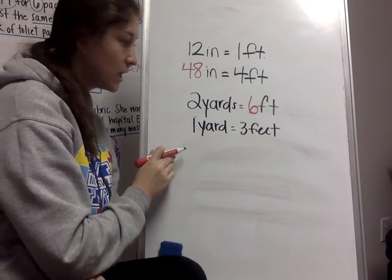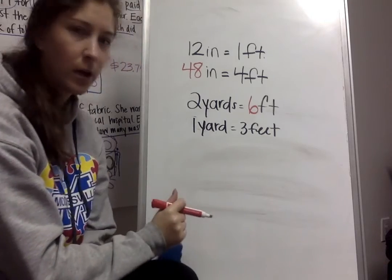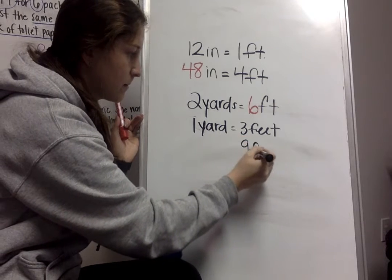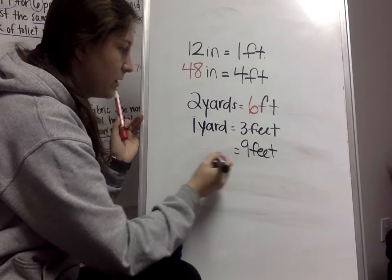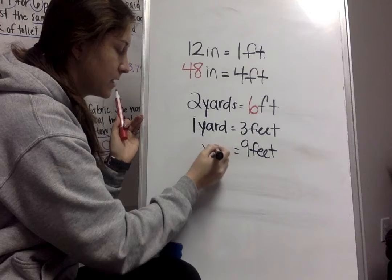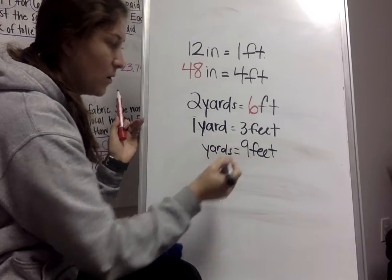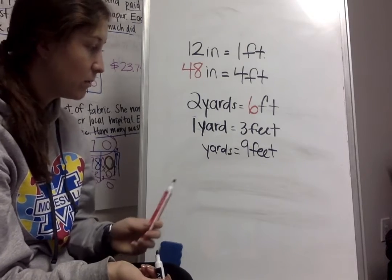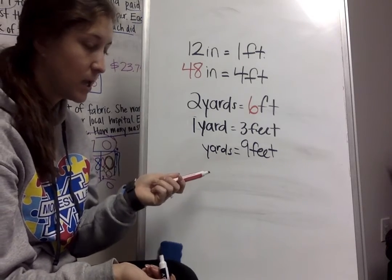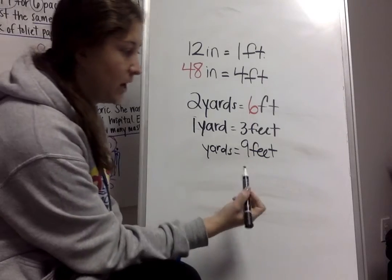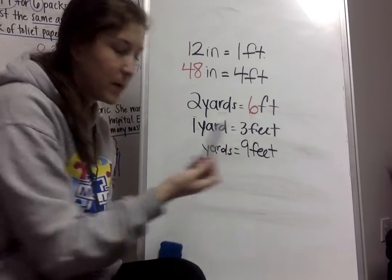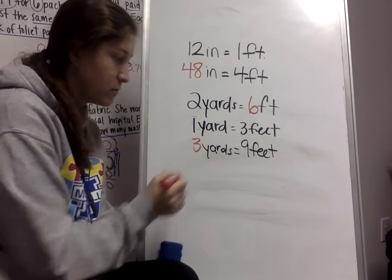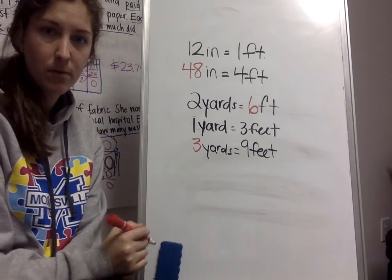If I know that there's one yard and a foot, what if I have nine feet, and I want to figure out how many yards that is? Well, instead of multiplying this time, I would have to do the opposite, because I'm going from small to big. So small to big means I have to divide. I would have to divide nine by three, and I know that nine divided by three is three. So that would be three yards.